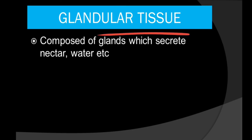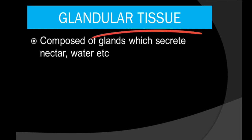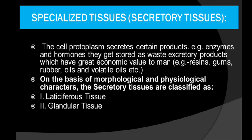There are also glandular tissues. Some plants contain glands which secrete nectar and water, secreted by the glandular tissues. So, these are the secretory tissues — beside permanent and meristematic tissues, some specialized tissues are also known. They are known as secretory tissues and there are two types: laticiferous tissue and glandular tissue.